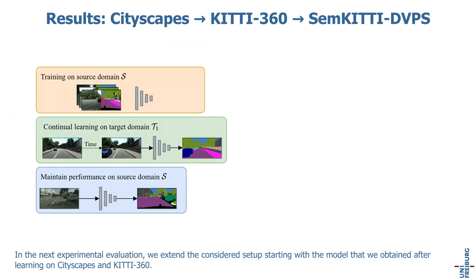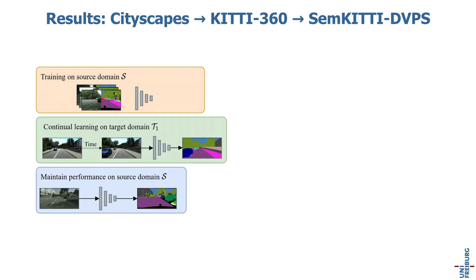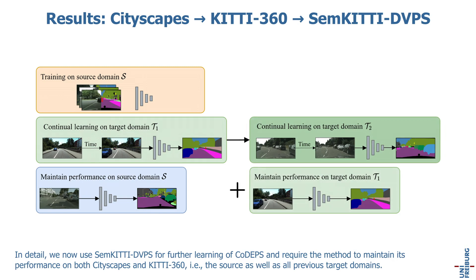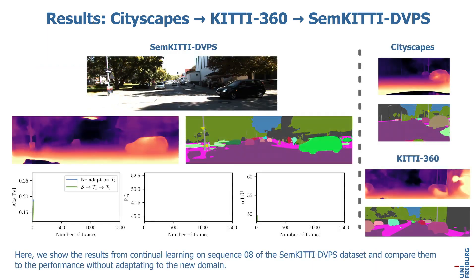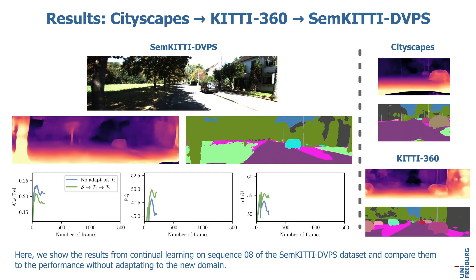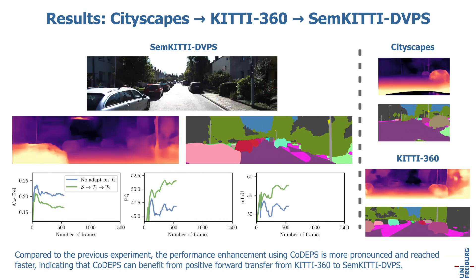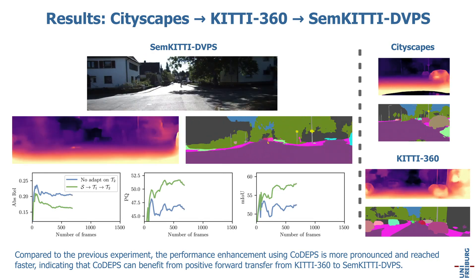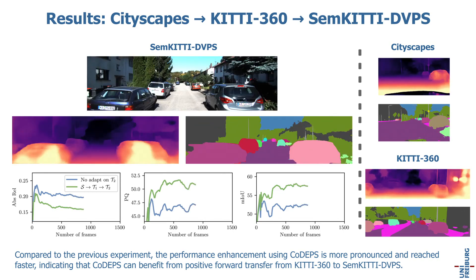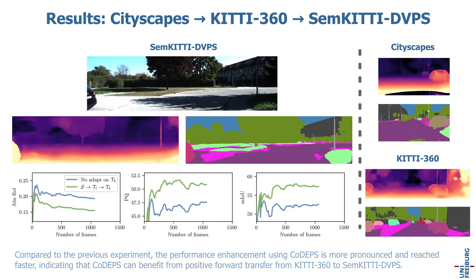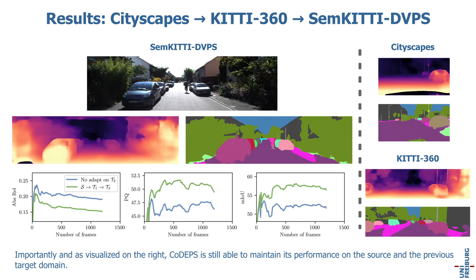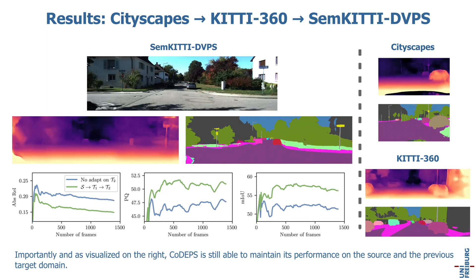In the next experimental evaluation, we extend the considered setup starting with the model obtained after learning on Cityscapes and KITTI360. In detail, we now use SemanticKITTI DVPS for further learning of CodeApps and require the method to maintain its performance on both Cityscapes and KITTI360, that is the source as well as all previous target domains. Here, we show the results from continual learning on sequence 8 of the SemanticKITTI DVPS dataset and compare them to the performance without adapting to the new domain. Compared to the previous experiment, the performance enhancement using CodeApps is more pronounced and reached faster, indicating that CodeApps can benefit from positive forward transfer from KITTI360 to SemanticKITTI DVPS. Importantly, and as visualized on the right, CodeApps is still able to maintain its performance on the source and the previous target domain.